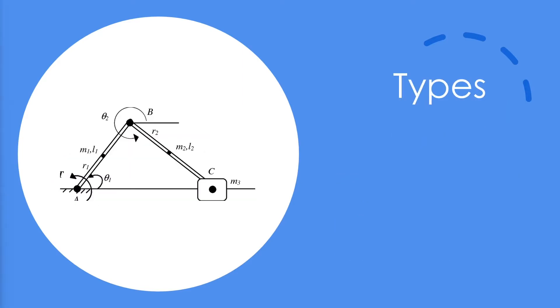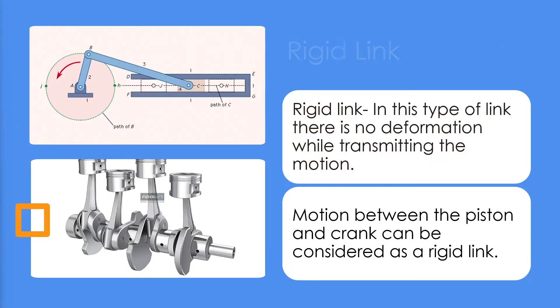Based on physical property we can define links in the following types. The first one is rigid link. In this type of link there is no deformation while transmitting the motion. For example, the motion between piston and crankshaft can be considered as a rigid link. In the case of piston and crank, there is no part which has deformation. Therefore, these kinds of links are rigid links.